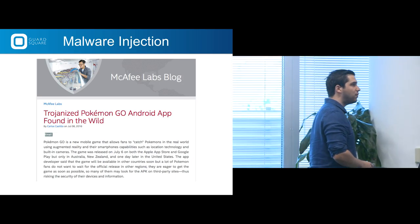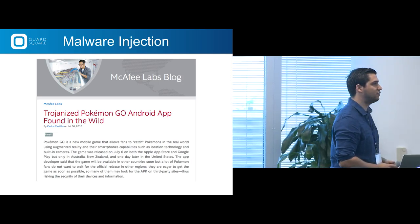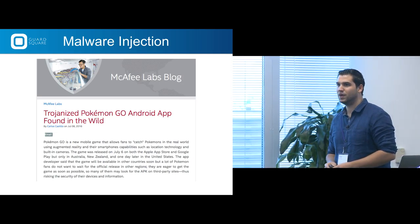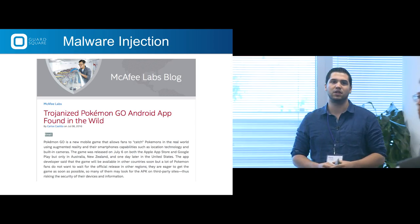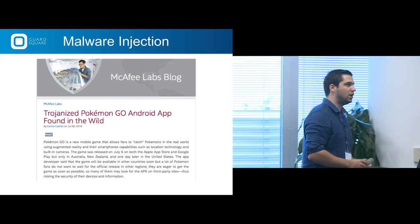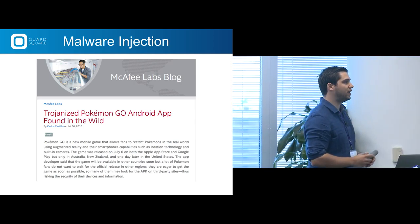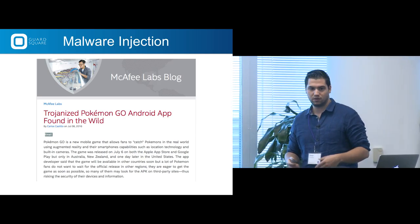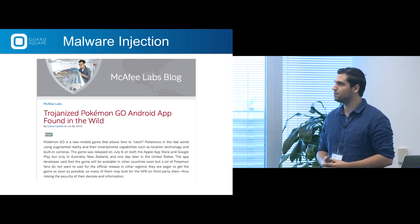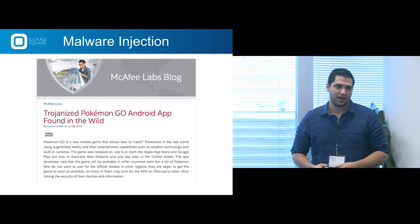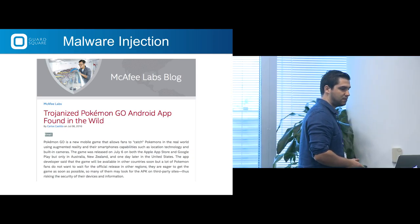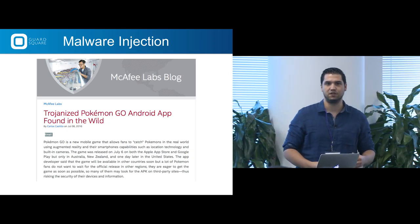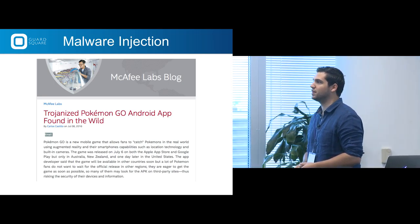The Pokemon Go app — it's a very popular app. When it launched it was only available in three countries, so a lot of people wanted to play but weren't able to download it. They resorted to third-party app stores, and hackers put the application on those stores with a Trojan horse introduced into it. It was massively downloaded and a lot of devices were compromised.